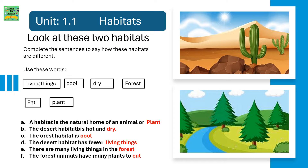The desert habitat is hot and dry. The forest habitat is cool. The desert habitat has fewer living things. There are many living things in the forest. The forest animals have many plants to eat.